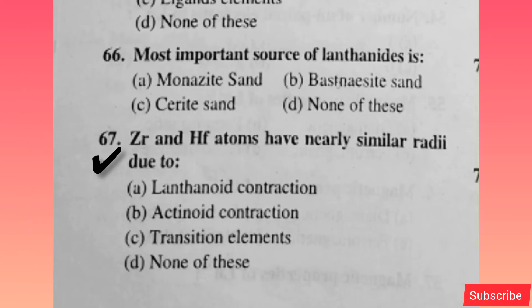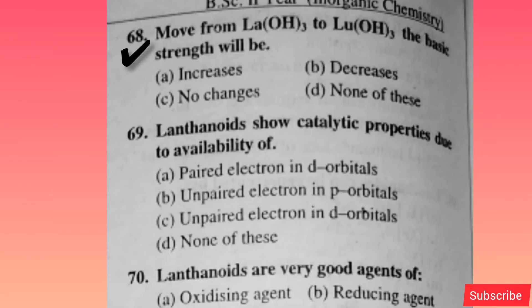Zr and Hf atoms have nearly similar radii due to lanthanide contraction — option A is correct. Moving from La(OH)3 to Lu(OH)3, the basic strength will decrease — option B is correct.